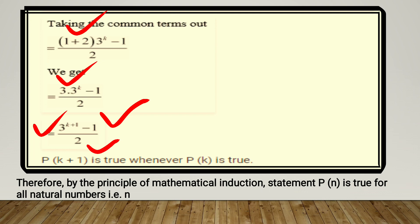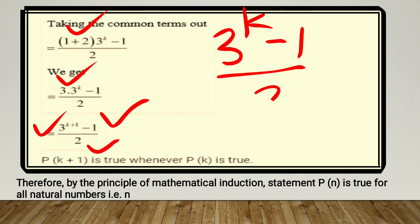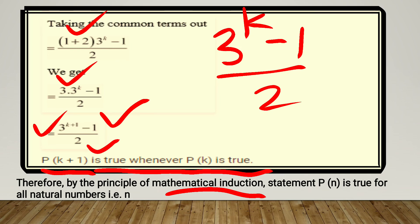So we can see that when it was k, RHS was (3^k - 1)/2, and for k+1 it becomes (3^(k+1) - 1)/2 — k is replaced by k+1 in RHS. Therefore P(k+1) is also true, just as P(k) is true. Finally, therefore, by the Principle of Mathematical Induction, statement P(n) is true for all natural numbers n. This means that for every natural number, this statement is true. Thank you.